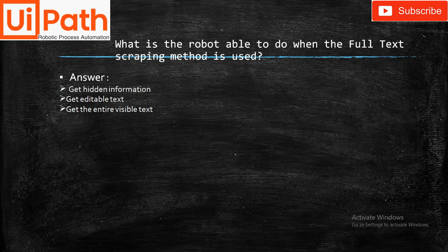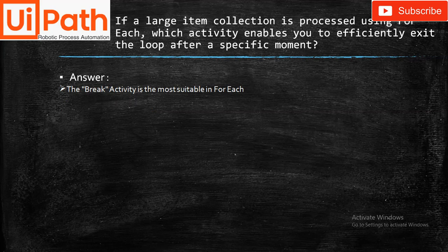What is the robot able to do when the Full Text scraping method is used? Answer: Get hidden information, get editable text, and get the entire visible text.